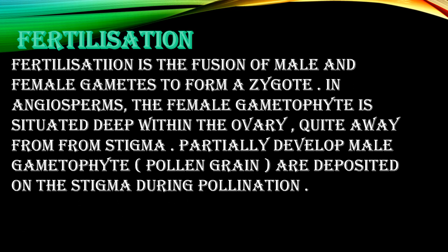The next topic is fertilization. Fertilization is the fusion of a male gamete with a female gamete to form a zygote. In all flowering plants, the female gametophyte is situated deep within the ovary, away from the stigma. Male gametophytes — pollen grains — are deposited on the stigma during pollination, and are then carried up to the ovary to fuse with the female gamete.